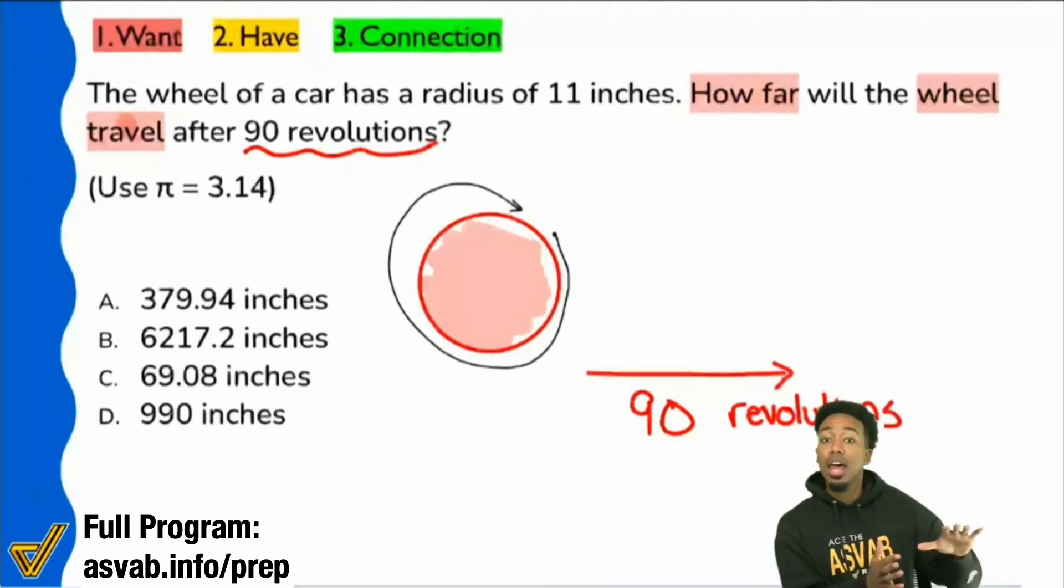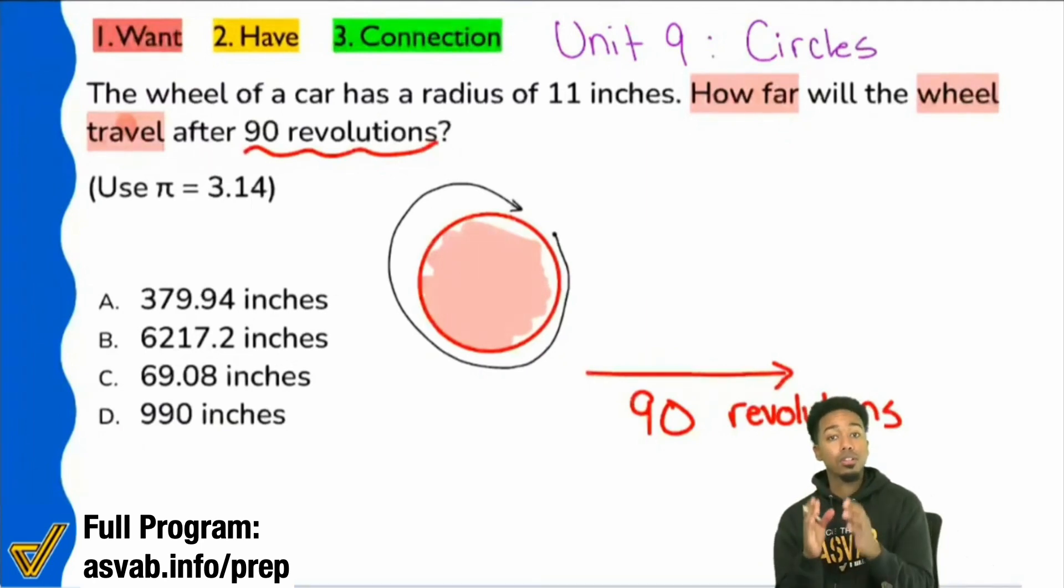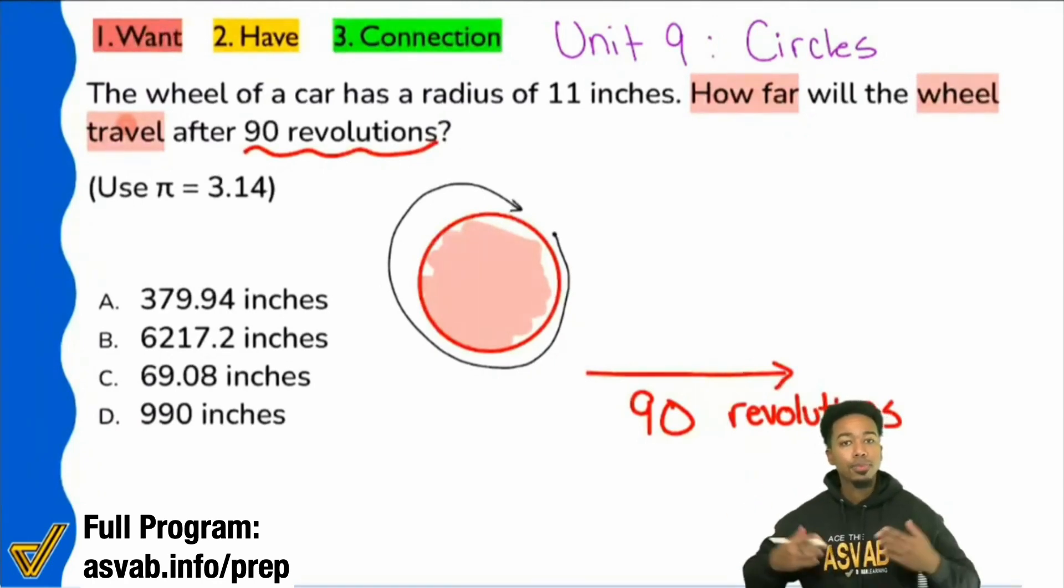Now, this is where we're going to start applying the math behind it. And this is going to be for circles. So allow me to write this here. This is going to be unit nine in arithmetic reasoning. Specifically, unit nine is right there. Cool. Unit nine is specifically for circles. So we're talking about circumference, area, and these types of problems that you see. So first things first, everybody, how are we going to get to 90 revolutions? Well, take it step by step.